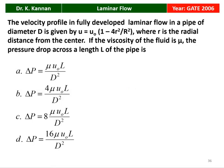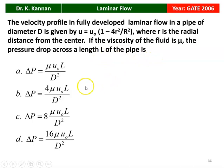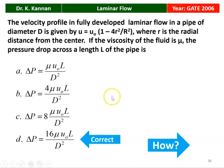The first question was asked in 2006. The velocity profile in fully developed laminar flow in a pipe of diameter D is given by U = U₀(1 − 4r²/R²), where r is the radial distance from the center and R is the outer radius of the pipe. The viscosity of the fluid is μ. The pressure drop across a length L of the pipe is given by — we have four options. The correct answer is option D: ΔP = 16μU₀L/D².